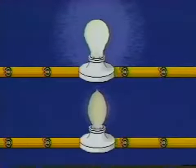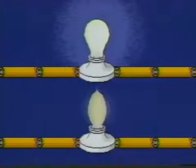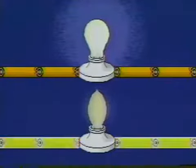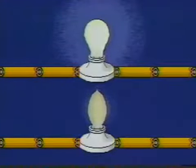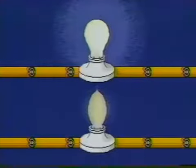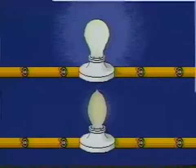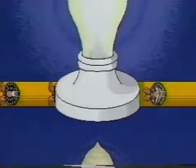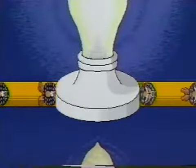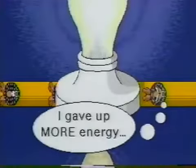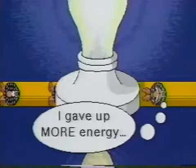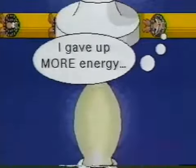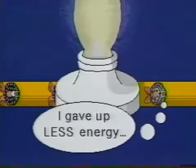Current, however, isn't the only important characteristic of a circuit. You can see that the current flowing through both bulbs is the same. Yet one bulb is glowing more brightly than the other. That means that in the circuit with the brighter bulb, each coulomb of charge must transfer more energy to the bulb compared to the circuit with a dimmer bulb.